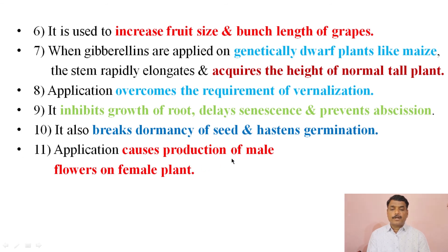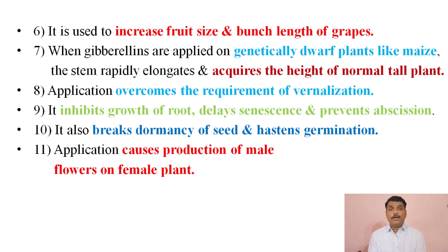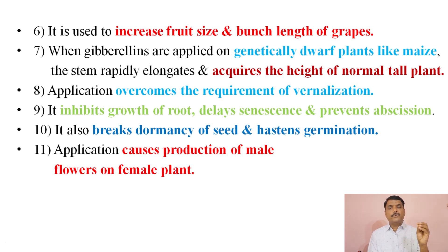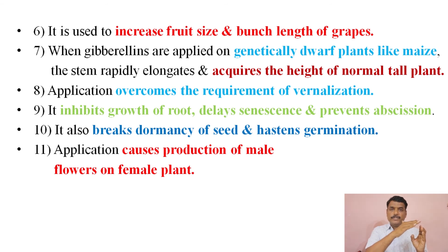Application of gibberellic acid causes production of male flowers on female plants. This is useful on unisexual plants, where one plant produces male flowers and another produces female flowers. If we spray gibberellic acid on a female plant which naturally produces only female flowers, that plant can produce male flowers.